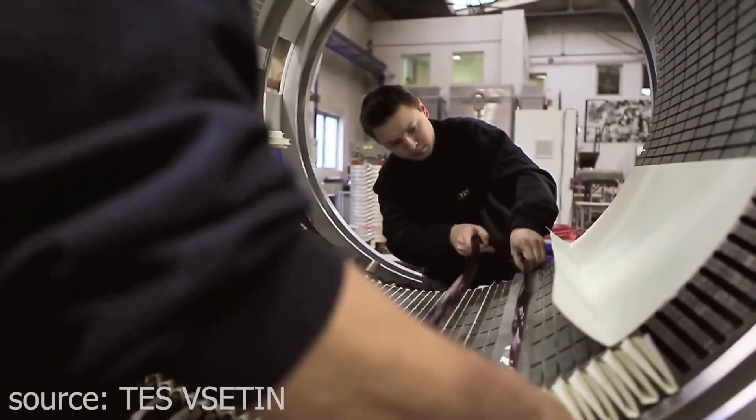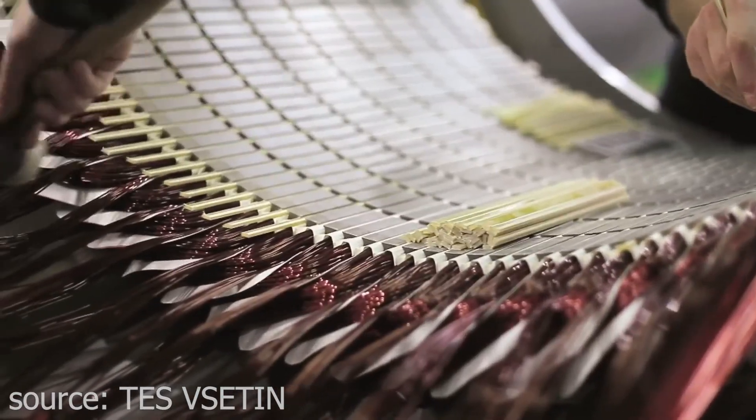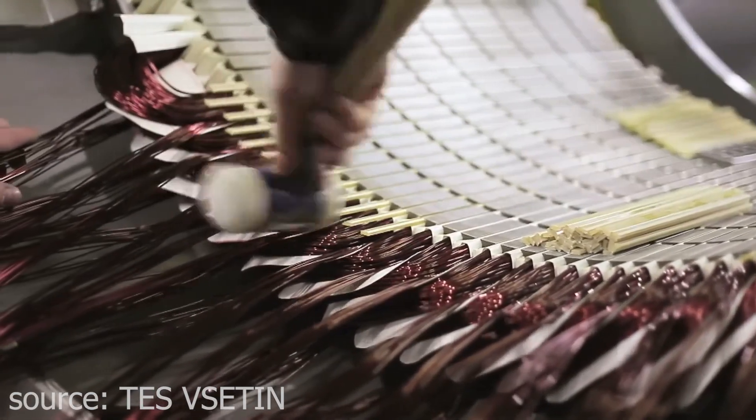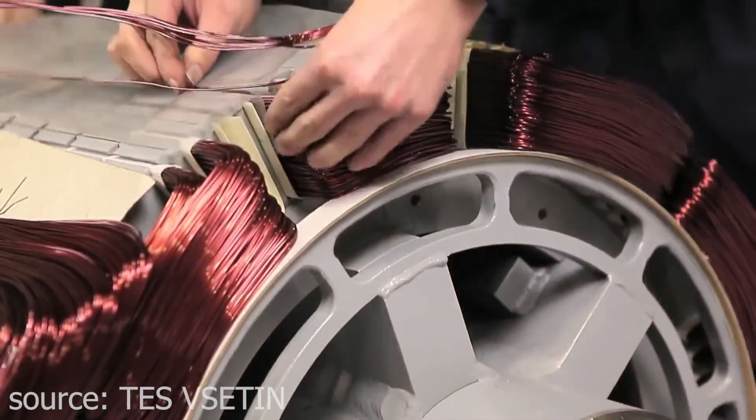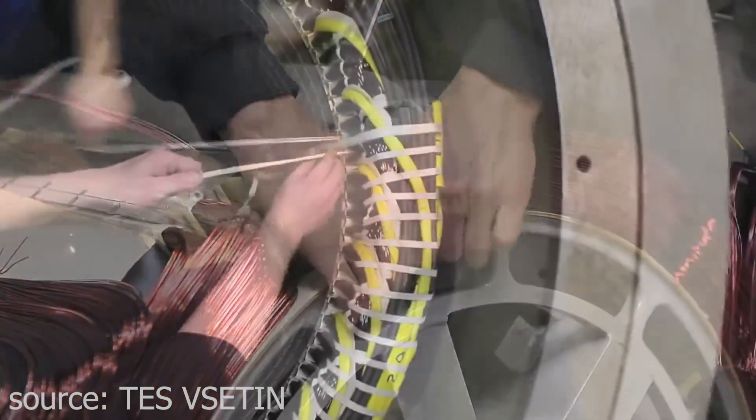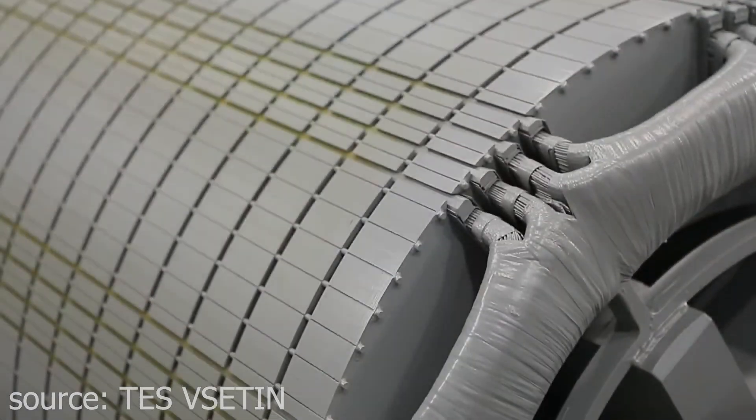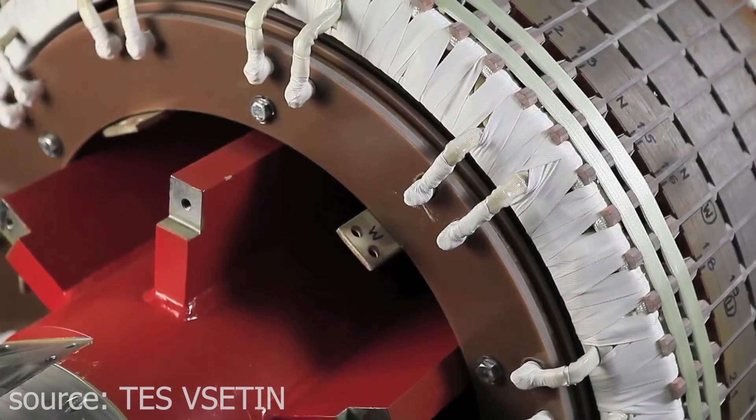The elimination of coils, be it copper or aluminum, simplifies the design of the generator to a great extent. This reduction in complexity translates to streamline manufacturing processes, minimizing costs and resources needed for production. Without the intricate winding process, the generator becomes less susceptible to wear and tear over time, leading to increased durability and longevity.